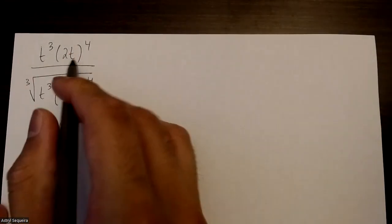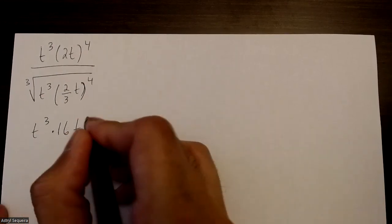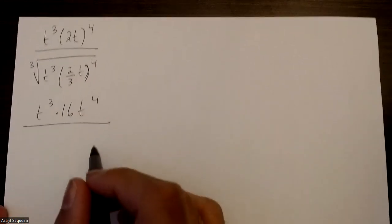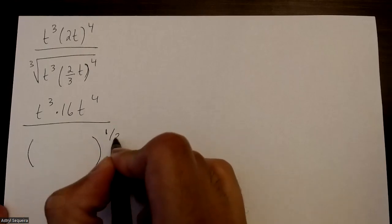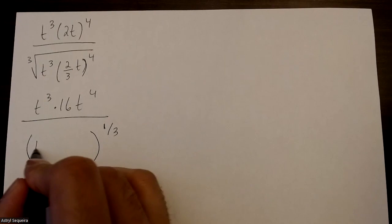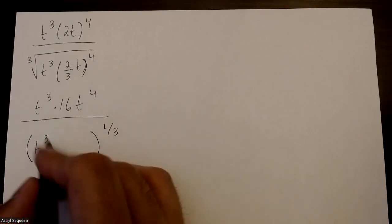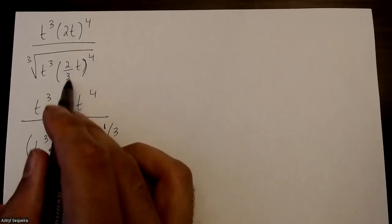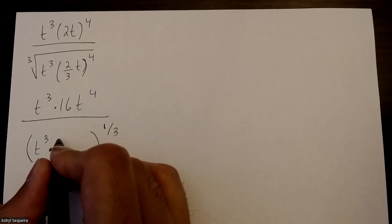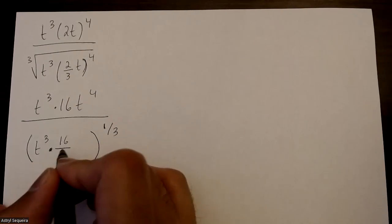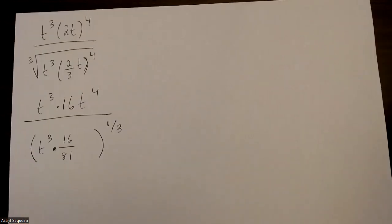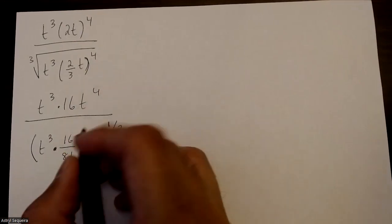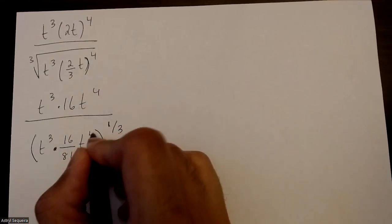2 to the power of 4 is just 16, and t to the power of 4 is just t to the power of 4. On the bottom, I'll turn this into a large bracket with an exponent of 1 over 3, and I'll also put this 4 into this bracket — so 2 over 3 to the power of 4 is just 16 over 81, and t to the power of 4 is just t to the power of 4.